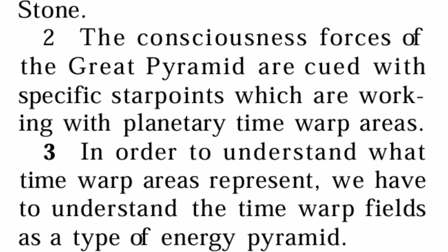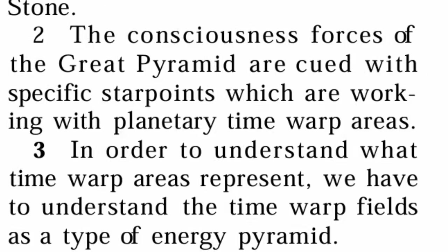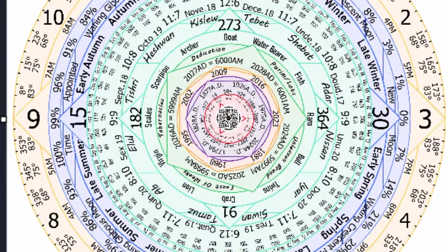The consciousness forces of the Great Pyramid are queued with specific star points, which are working with planetarium time warp areas. It's talking about the grid pattern. If we were to map out the Book of Enoch, the first book written, when you map out what he says, you can almost see this star alignment — especially from what Chris and I have done so far and what Stacey has added.